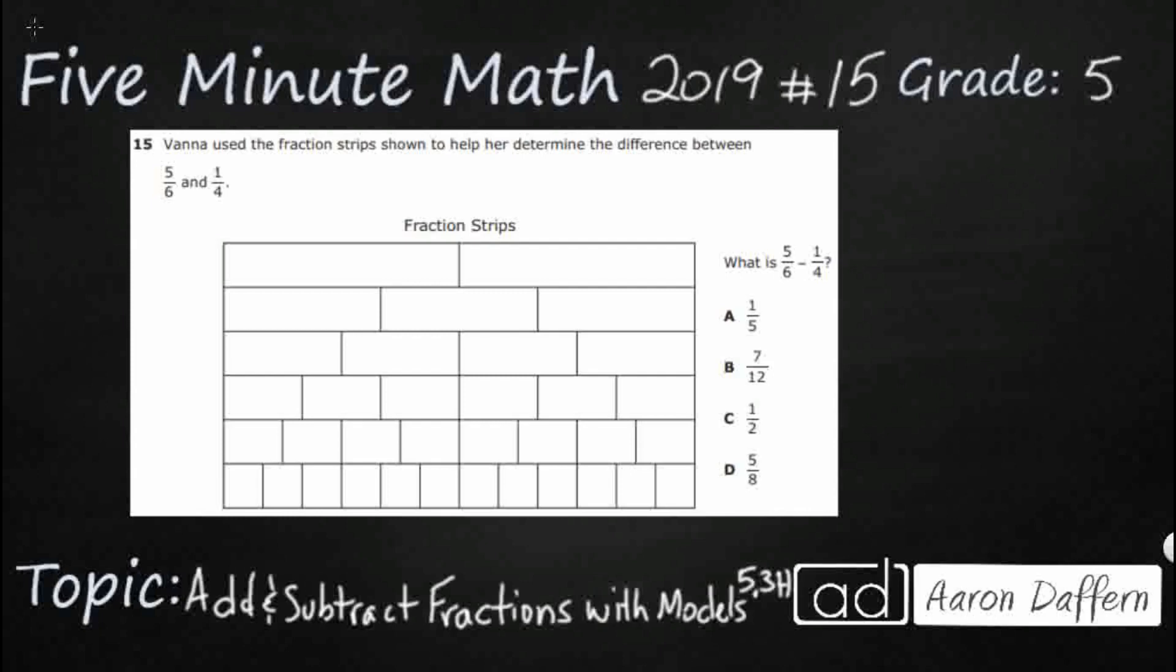So Vanna is using fraction strips to show the difference between 5/6 and 1/4. So we've got 5/6 minus 1/4. They tell you that difference means we're looking for the answer to a subtraction problem. So we can use these fraction strips. The problem is we don't have any labels on these fraction strips.